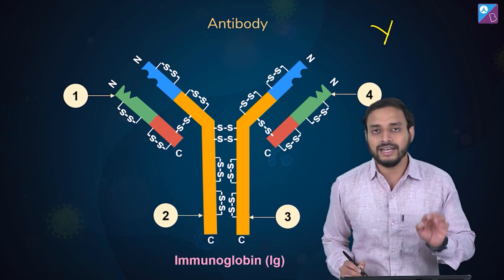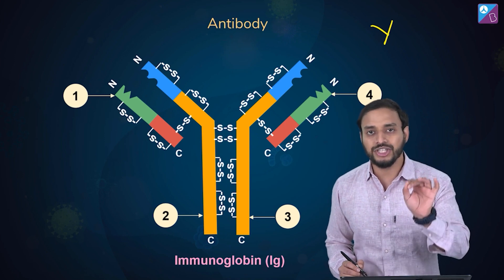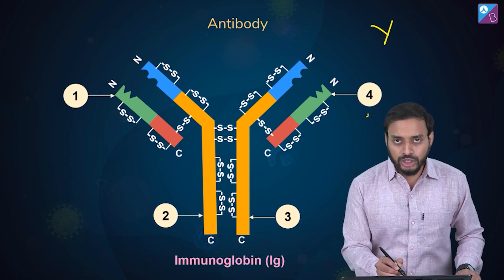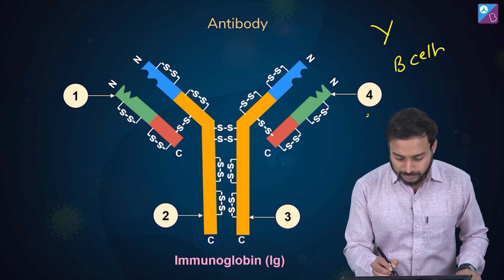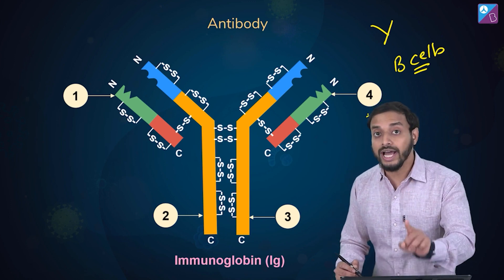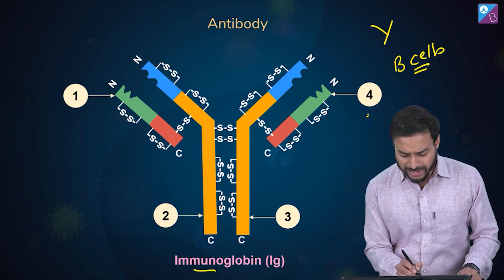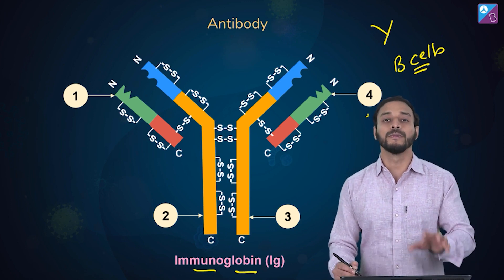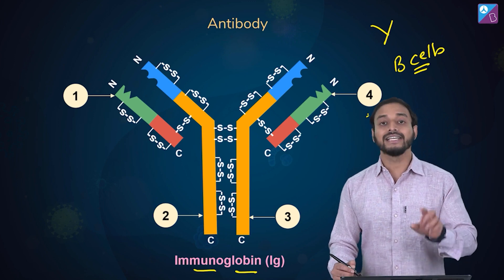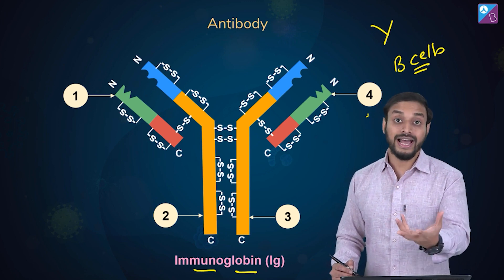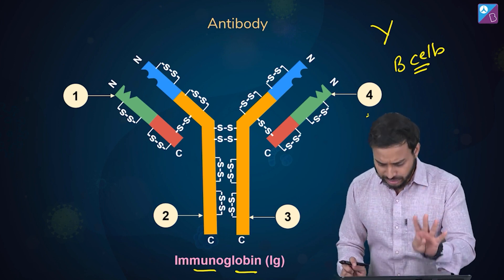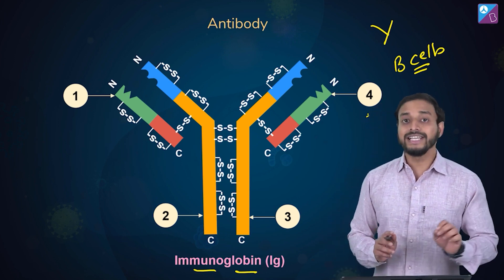These labels refer to peptide chains — soluble protein molecules formed by the B cells. Note it down: B cells produce the antibodies. These are also known as immunoglobulins, and there are many types of immunoglobulins formed by our body. So the Y-shaped structure is made of four peptide chains.